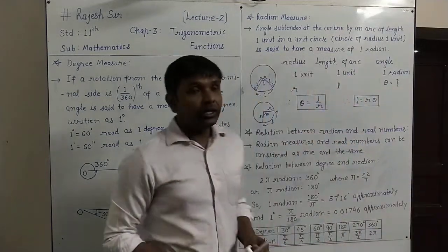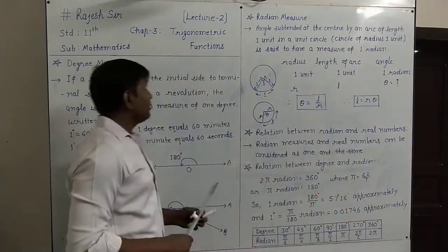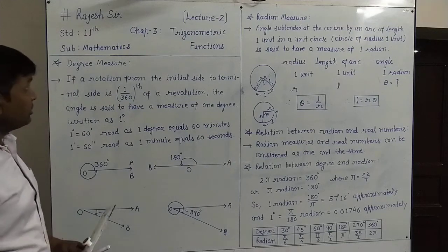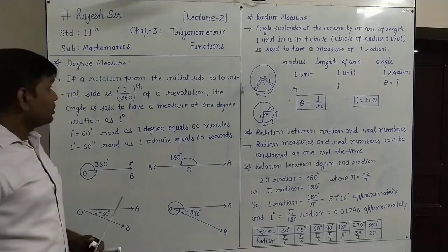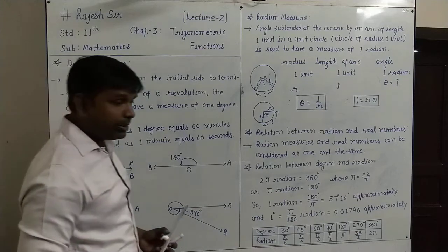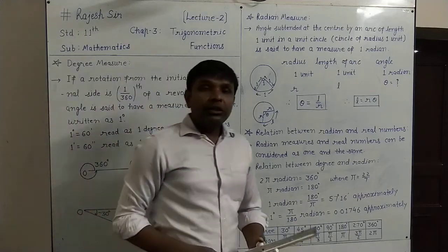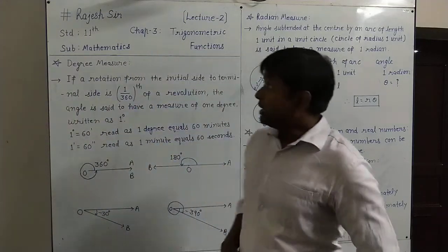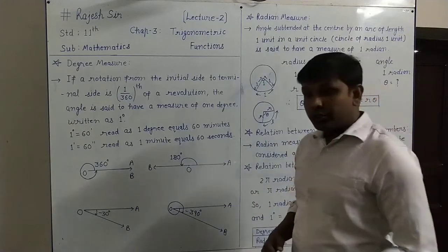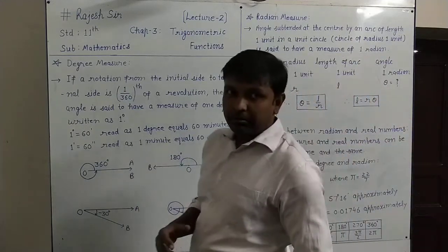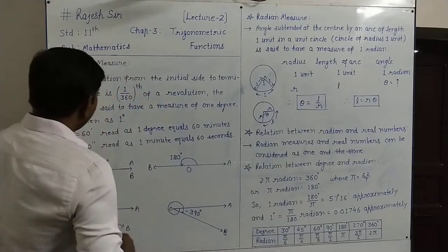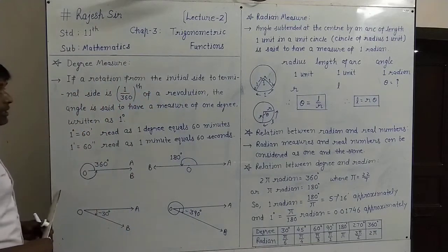Hello students, welcome to Standard 11, Subject Mathematics, Chapter 3, Trigonometric Functions. This is lecture number 2. Here we will understand about what is degree measure and gradient measure. As we have seen in the first lecture, degree measure and gradient measures are the units of the measurement of angles. So what are they? You will understand in this lecture.